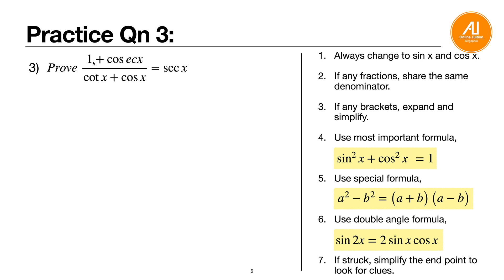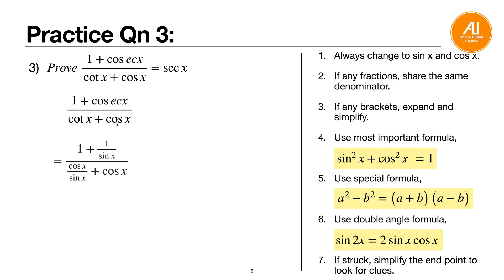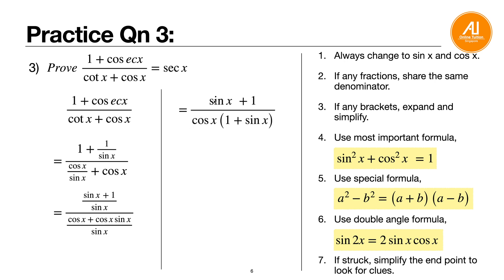Question three: prove (1 plus cosecant x) over (cotangent x plus cosine x) equals secant x. Change to sine and cosine: cosecant is 1 over sine, cotangent is cosine over sine. Make fractions share the same denominator: numerator becomes (sine x plus 1) over sine x; denominator becomes (cosine x plus cosine x sine x) over sine x. Cancel the common denominator sine x; the denominator has cosine x as a common factor giving cosine x(1 plus sine x). Cancel (1 plus sine x), leaving 1 over cosine x, which is secant x.